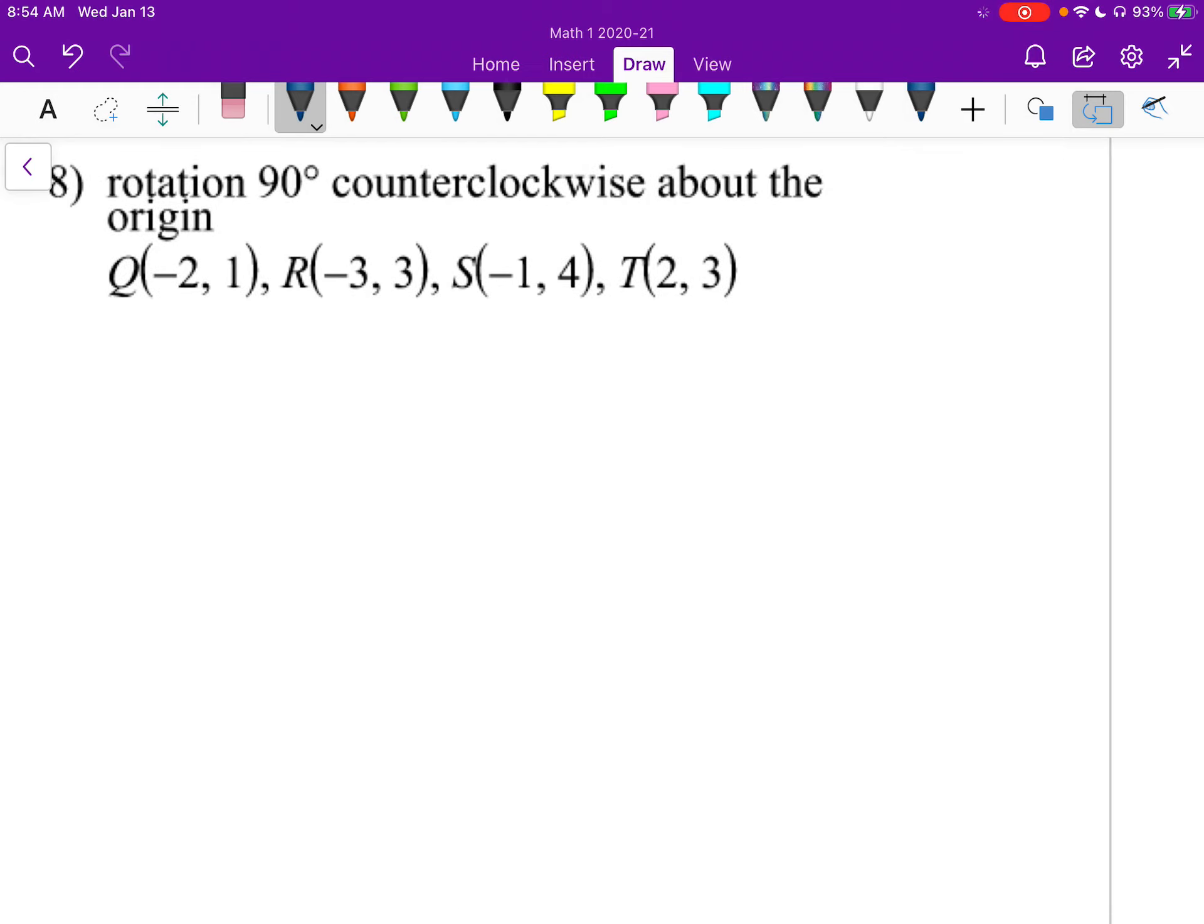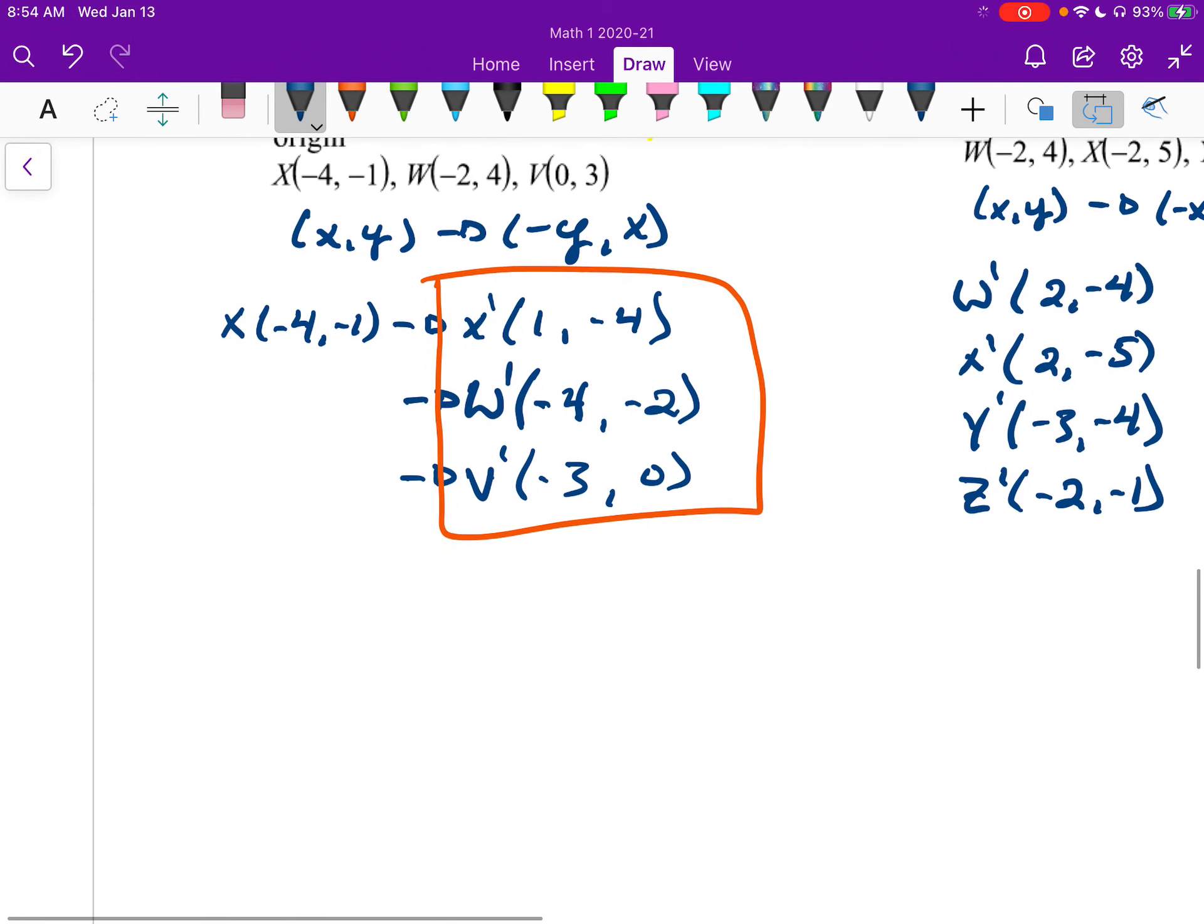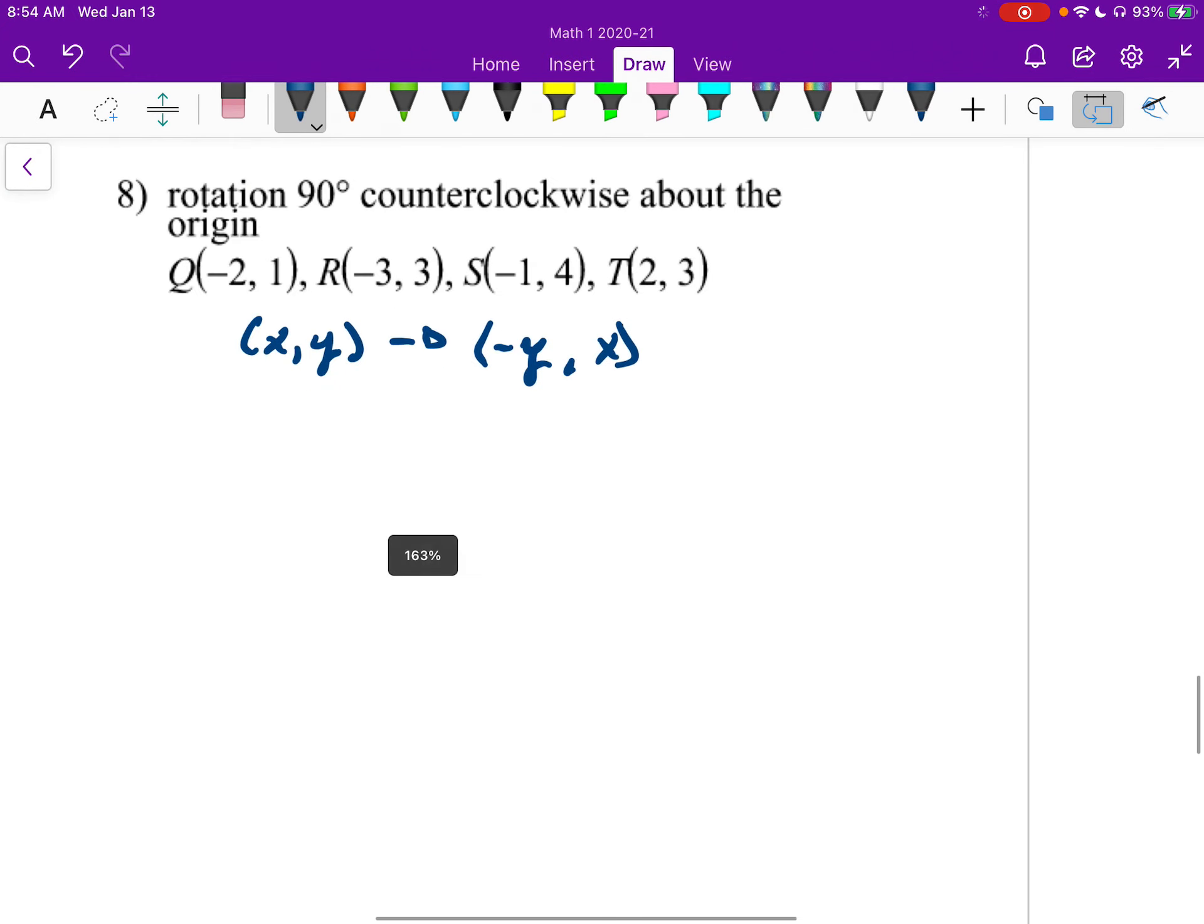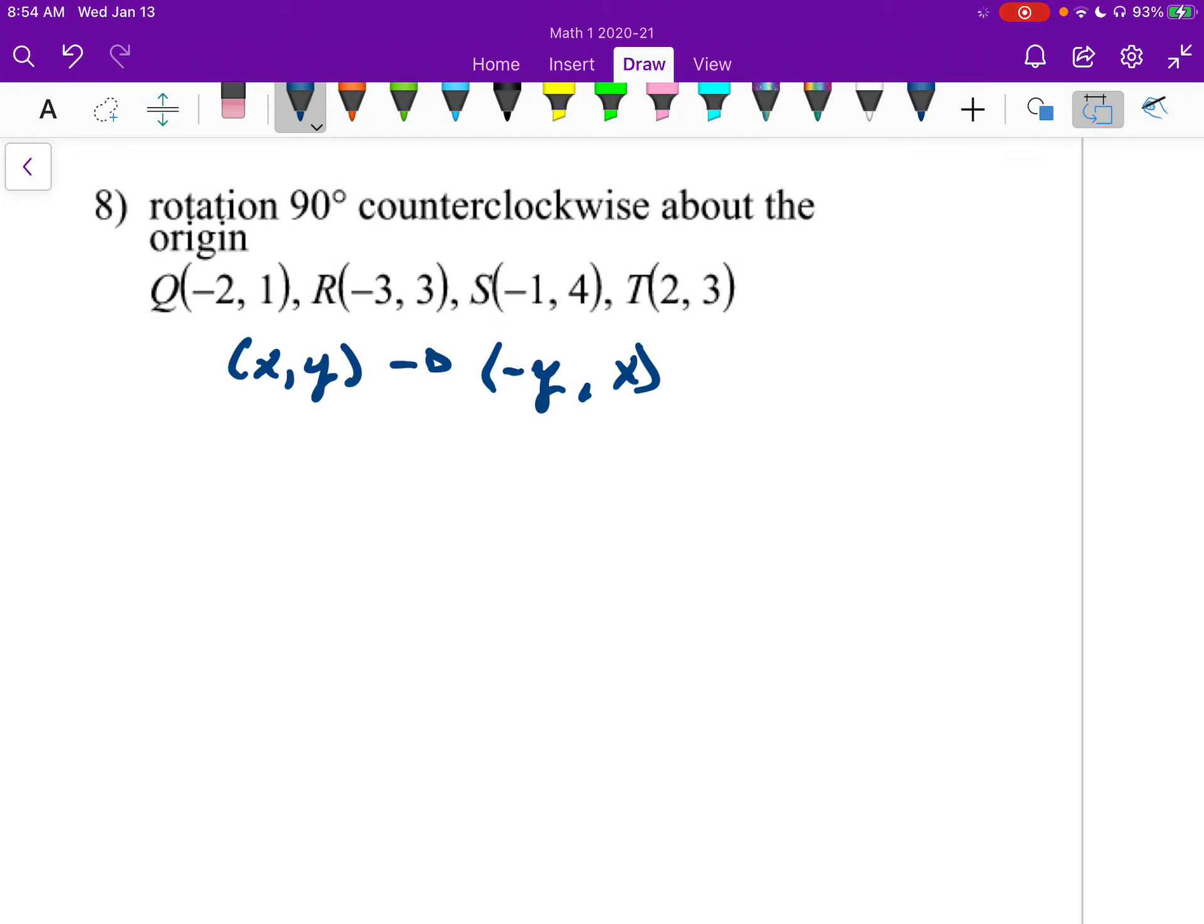Number eight. Rotation counterclockwise. What is counterclockwise? We say x, y goes to negative y, x. Is that the same one as the number? Yep, that is the same one. Well, the process still works the same if you were to do it clockwise. So q prime. I start off with negative y. So that'll be a negative 1. And then x is negative 2. r prime will be negative 3, negative 3, right? My first negative 3 comes from the second. But it makes it negative, right? s prime, it will be at negative 4, negative 1. And t prime will be at negative 3, 2.